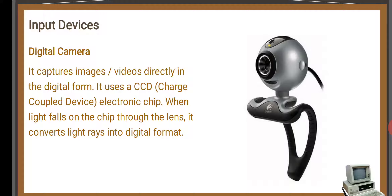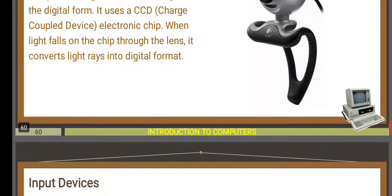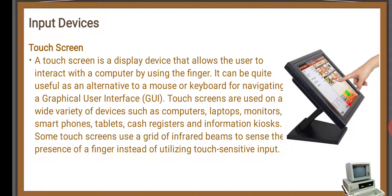The next input device is the digital camera. A digital camera captures images and videos in digital form and sends them to the computer. When light falls on the chip through the lens, it converts the light rays into digital format. This is also one of the input devices.